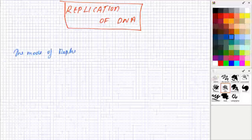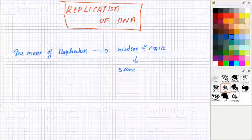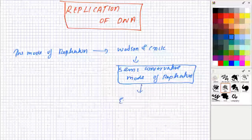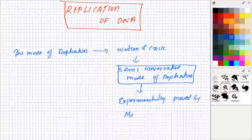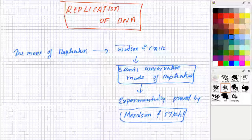The model of replication of DNA, as everybody knows, is proposed by Watson and Crick, and the very famous model is known as the semi-conservative mode of replication. This mode is experimentally proved by two other scientists known as Meselson and Stahl. These words are very important: Watson and Crick, semi-conservative model, and Meselson and Stahl's experiment.